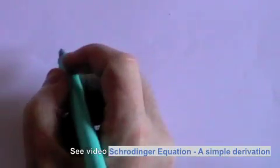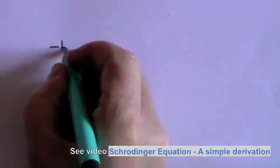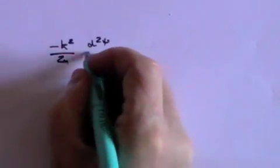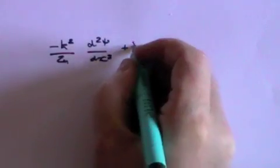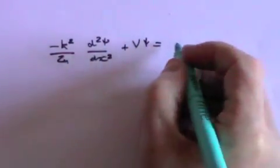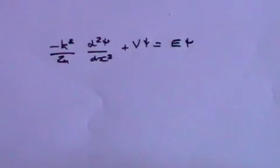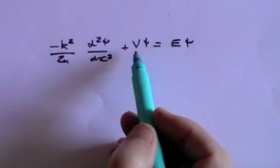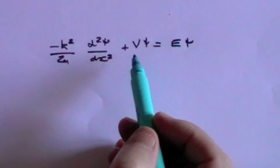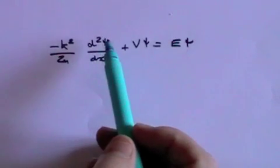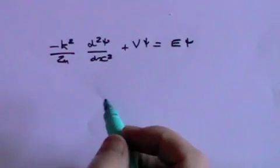We start off with the time-independent Schrödinger equation: minus h-bar squared over 2m, times d²ψ/dx², plus Vψ equals Eψ. V is the potential — whatever that may be, could be gravitational, could be electric, could be whatever. E is the energy and ψ is the wave function.